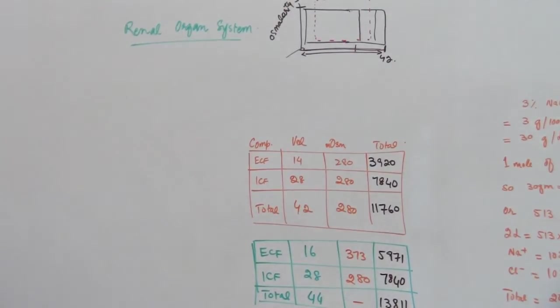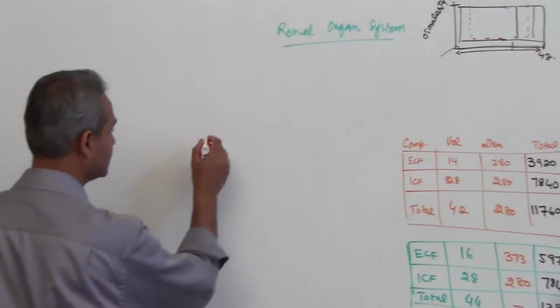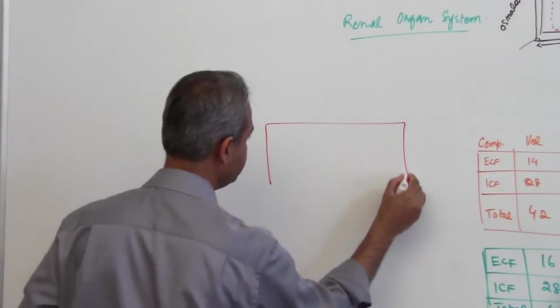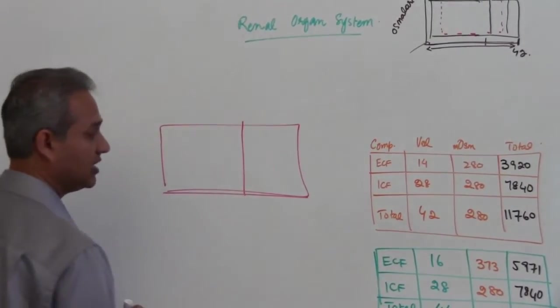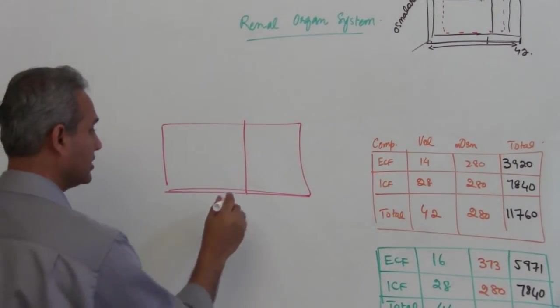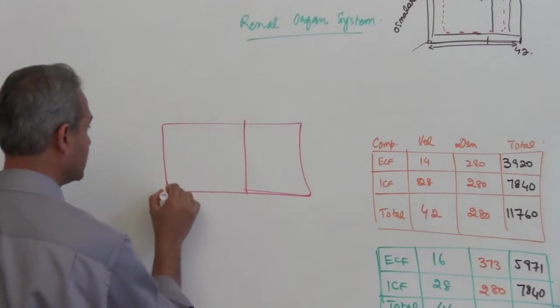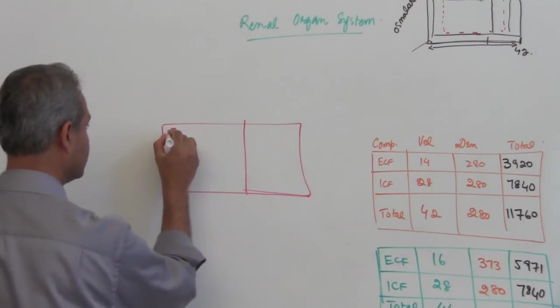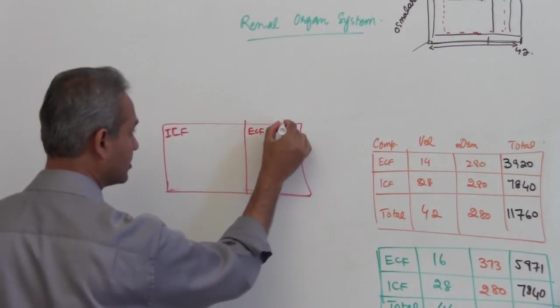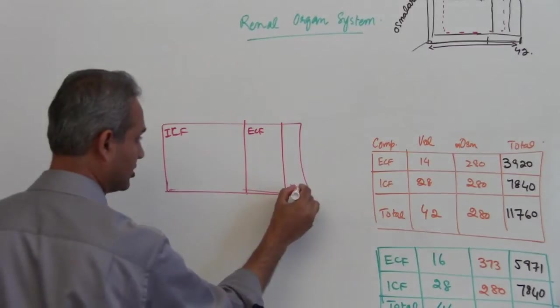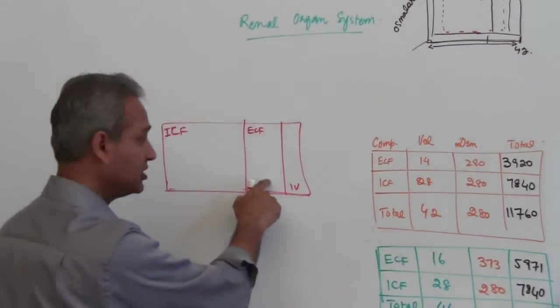So let us say if I make this diagram over here, this is a healthy person. He has his ICF, this is ECF, this part is intravascular compartment, this is interstitial compartment.